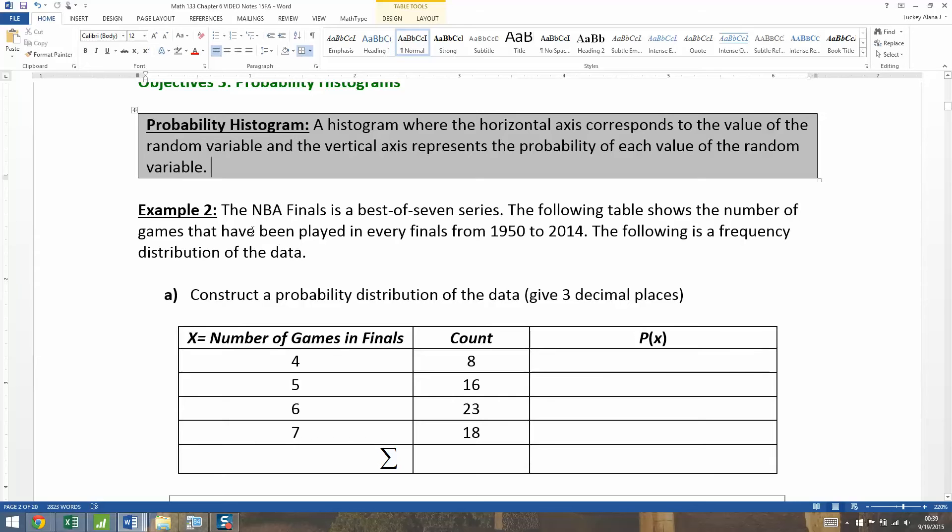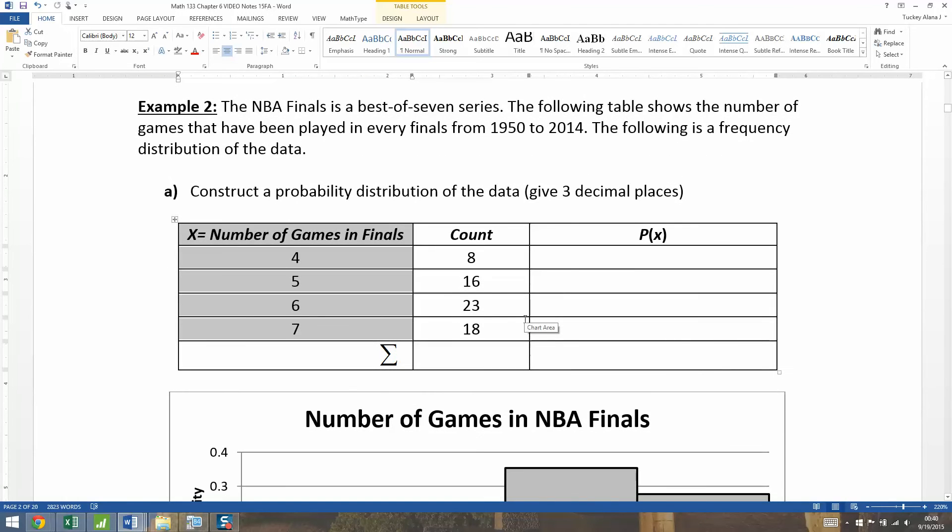Example 2: The NBA Finals is a best-of-seven series. The following table shows the number of games that have been played in every finals from 1950 to 2014. This is a frequency distribution of the data. When you look at this variable X, this is a random variable, because if you randomly select one of the NBA Finals series out of a hat, you don't know ahead of time if it's going to be a four-game series, five-game series, six or seven. It's random.